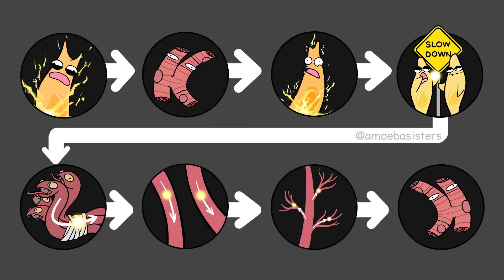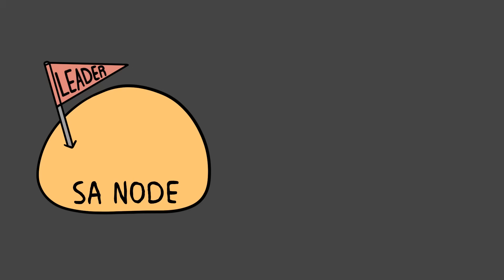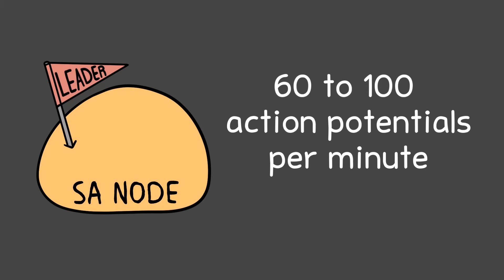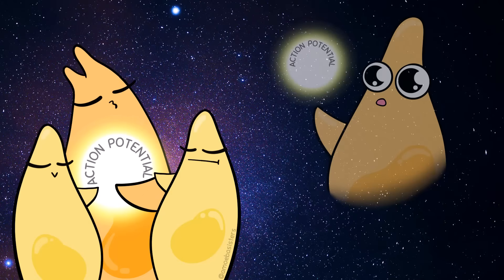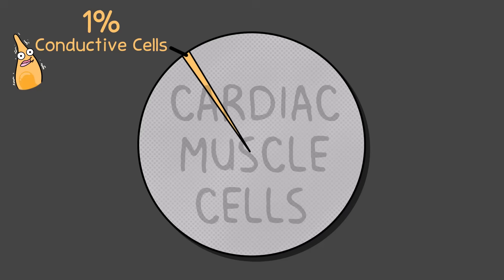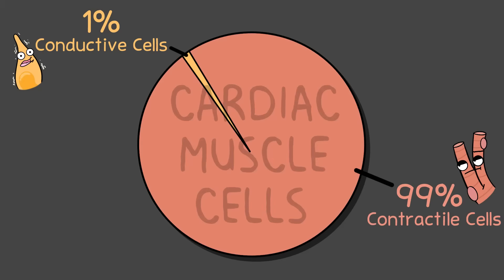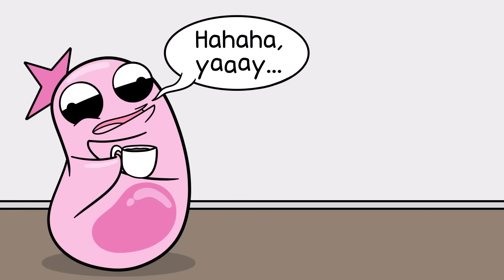All of these — the SA node, the AV node, the atrioventricular bundle, the right and left bundle branches, the Purkinje fibers — are essential components of the cardiac conduction system. When a human is resting, you can expect the SA node to be generating 60 to 100 action potentials a minute. Keep in mind these conductive cells make up only around one percent of the heart muscle cells, meaning a great percentage of heart muscle cells are actually contractile cells doing the actual contracting work.